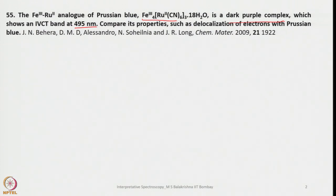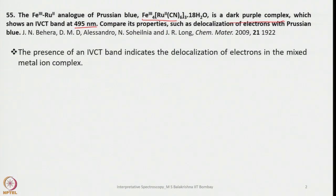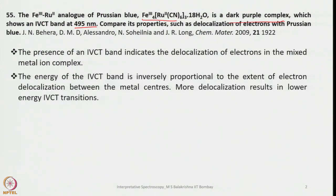When we talk about delocalization, it is essentially the charge transfer. The presence of an IVCT band — metal-to-metal charge transfer band — indicates the delocalization of electrons in the mixed metal system. One metal is a donor and one is an acceptor; electrons moving from the acceptor to the donor is what we call delocalization. In all charge transfer transitions, we see delocalization, and the extent of delocalization tells us about the intensity of that band. The energy of the IVCT band is inversely proportional to the extent of electron delocalization between the metal centers.